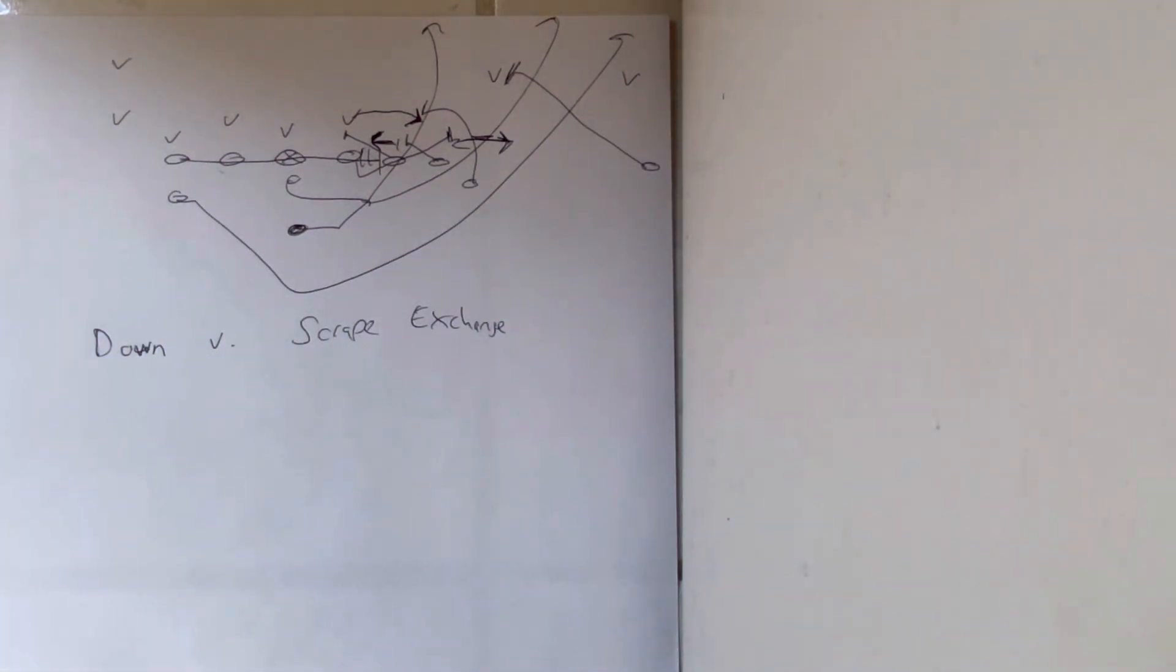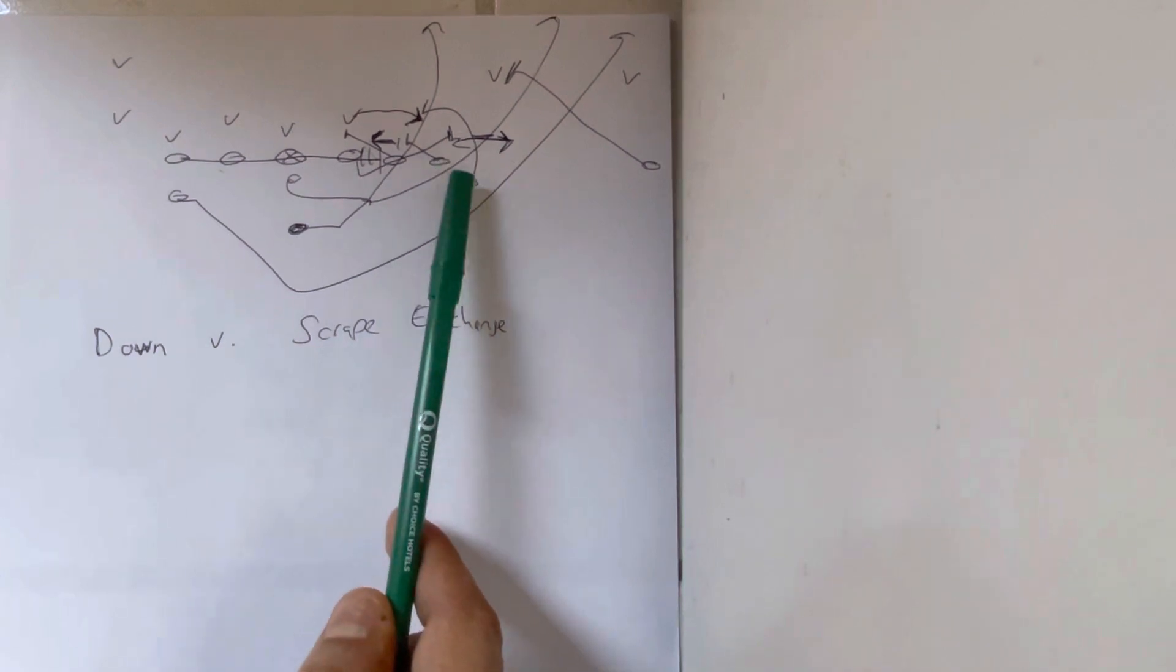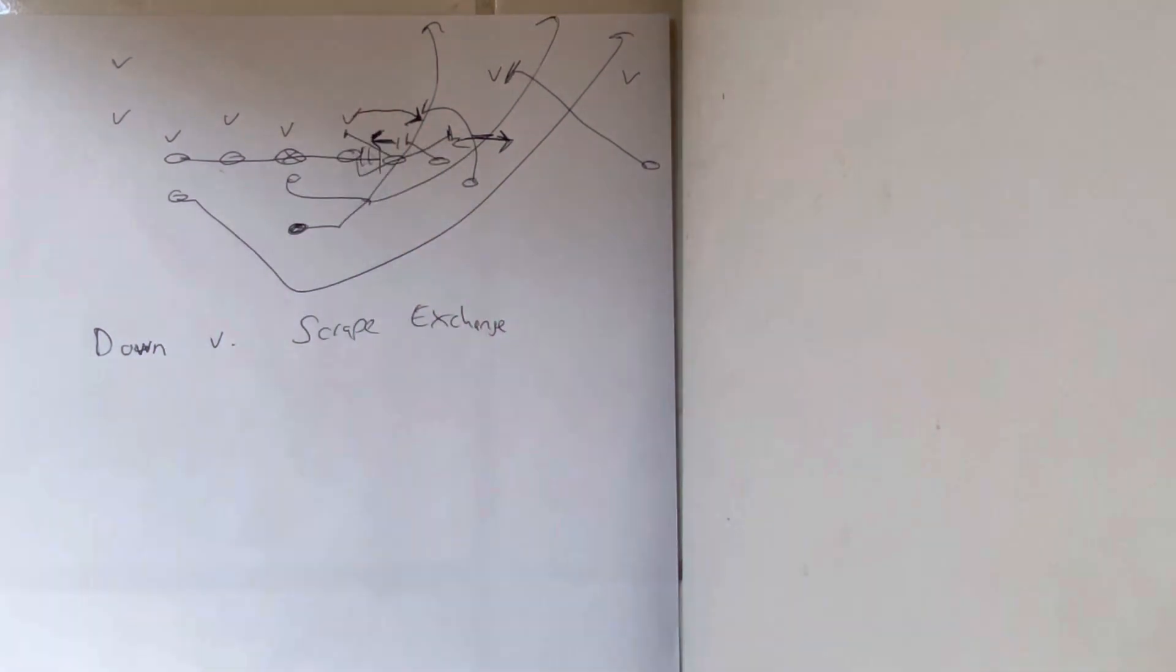Off we go. The A-back can align inside foot on the outside foot of the heavy tackle. He's going to come over the top and wall off the Mike, so when the Mike runs over the top, bam, he's going to get him right there.